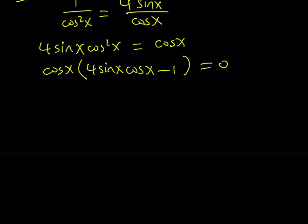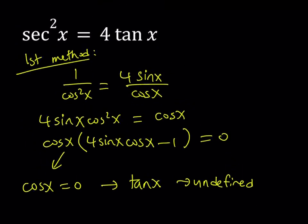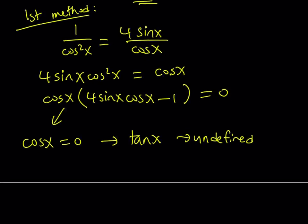Now, if cosine x is equal to 0, obviously that's going to be a solution of this equation, but not the original one. Because if cosine x is equal to 0, then tangent x will be undefined. And you don't want that because we have a tangent x in the equation. So we want to be very careful not to make it undefined. So cosine x cannot be 0. We're going to reject that.